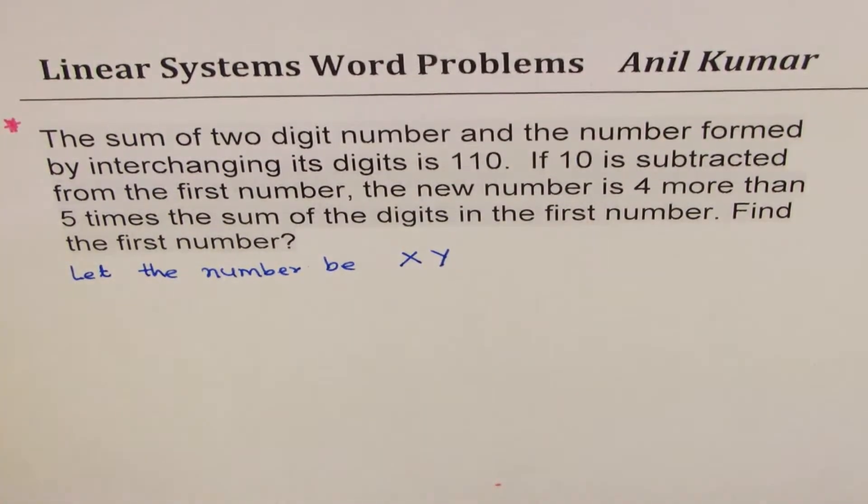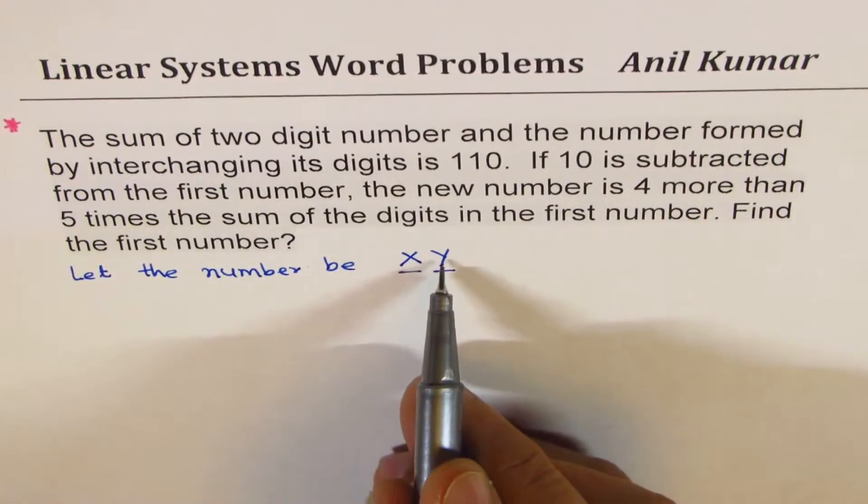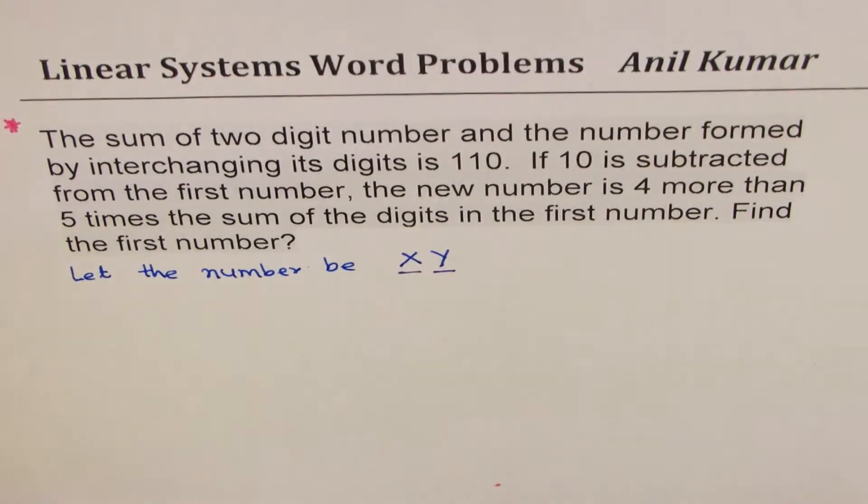So that is a two digit number. When I say x, y, that means y is in the ones place and x is in tens place.